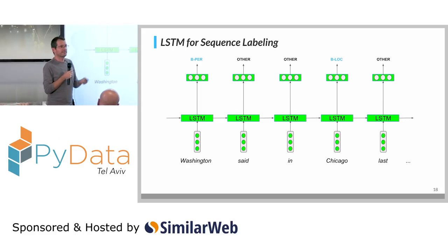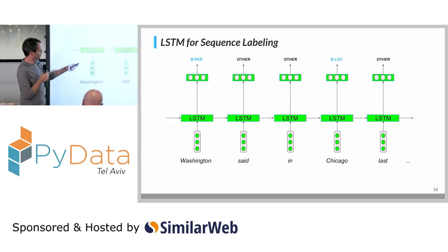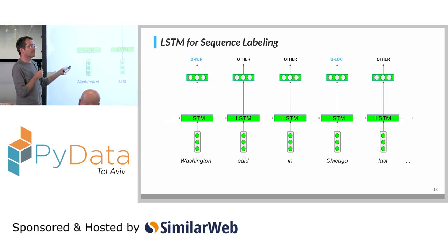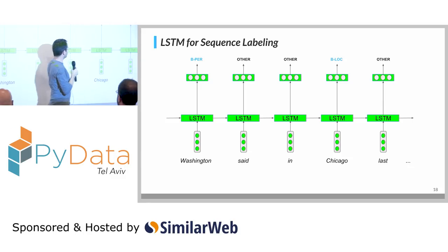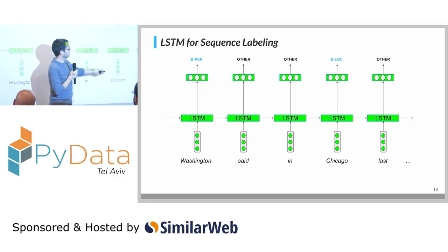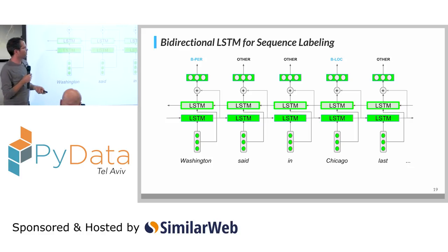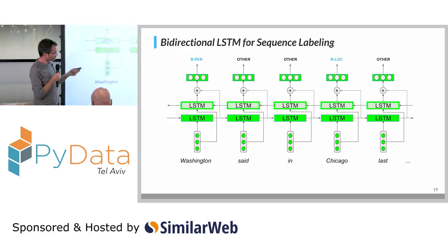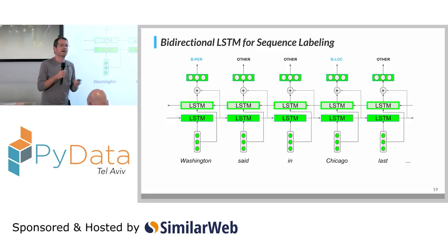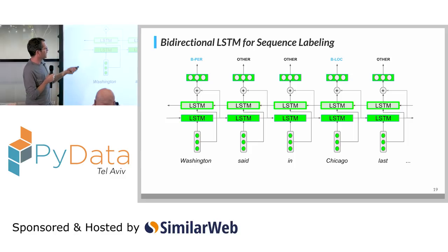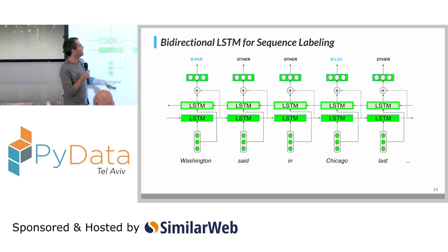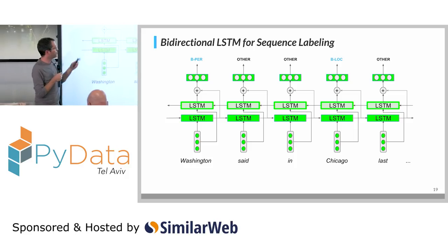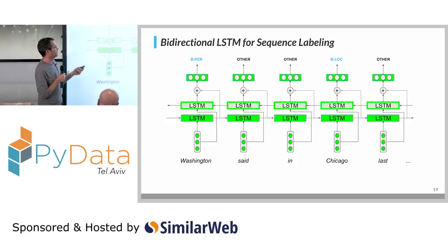The information also sometimes comes from the right-hand side. For a word like 'Chicago,' I can only benefit from information that comes from the beginning of the sentence, not the other side. So we typically use another LSTM process running in the opposite direction — we call this bi-directional LSTM. These are two independent processes, and typically we have two vectors — one from each direction. We concatenate them and use that combined vector as input for the final prediction layer.